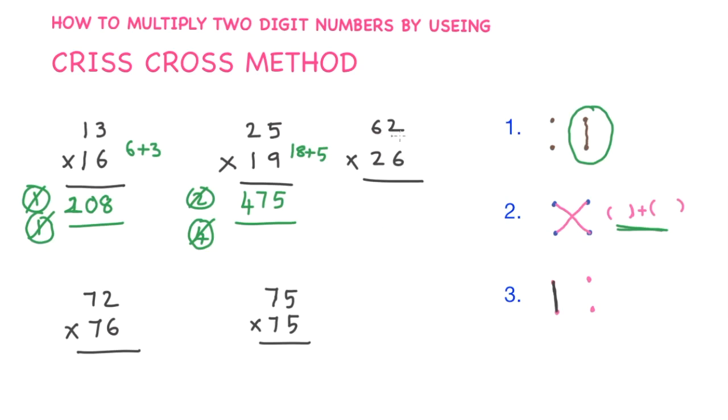Similarly, 62 × 26. Step 1 is what? Multiply these two elements. 6 twos are 12. As it is a two-digit number, you write 1 aside.